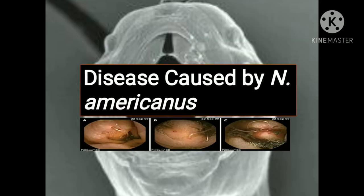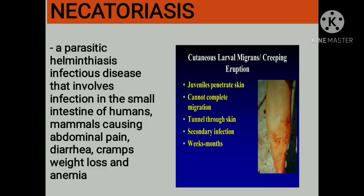What are the diseases caused by Necator americanus? Necatoriasis is a term used to refer to the parasitic helminthiasis infectious disease that involves infection of the small intestine of humans caused by Necator americanus. It causes abdominal pain, diarrhea, cramps, weight loss, and anemia to the host.